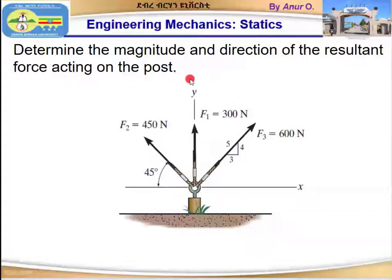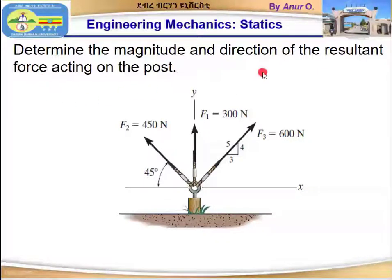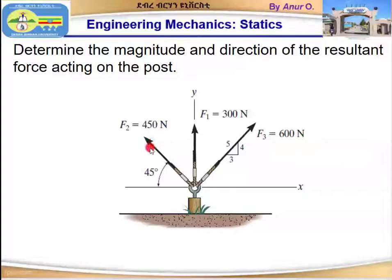Welcome to Engineering the Mechanics. In this video we are going to see an example — a 2D vector problem. The question is: determine the magnitude and direction of the resultant force acting on the post. We have three forces acting: F1 is 300 newtons, F2 is 450 newtons located at 45 degrees from the negative x-axis, and F3 is 600 newtons given in a small slope triangle 3-4-5.